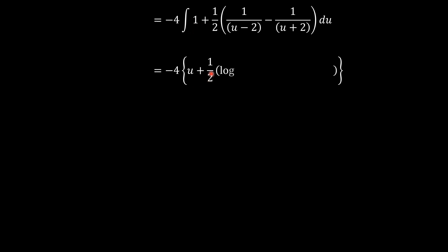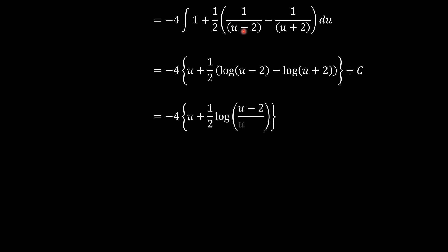Integrating, we get u plus one half times the natural logarithm of (u minus 2) minus the natural logarithm of (u plus 2). This is because the numerator is the derivative of the denominator in each case. Using the rules of logarithms, the difference of two log functions becomes the log of their quotient, giving u plus one half times log of (u minus 2) over (u plus 2), plus the integration constant.